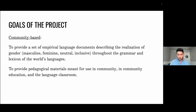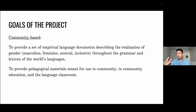Here are the goals of the project: to provide a set of empirical language documents describing the realization of gender — the traditional masculines and feminines, any neutral options, and any inclusive options going on throughout the grammar and lexicon of the world's languages, as many as I can research with my students. And also to provide pedagogical materials meant for use in queer community, in community education — sometimes I go out and give workshops at different community centers — and also resources for the language classroom. This latter initiative is one that I need your help with.